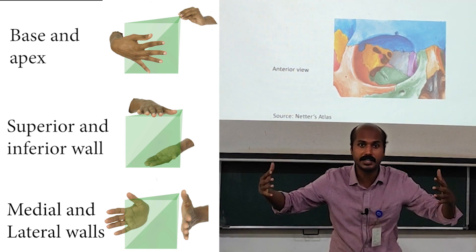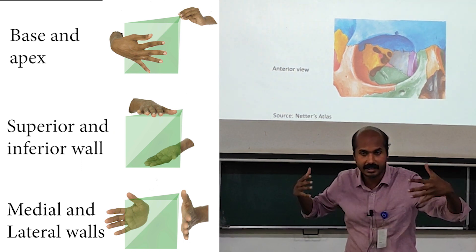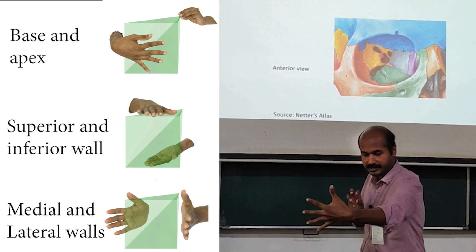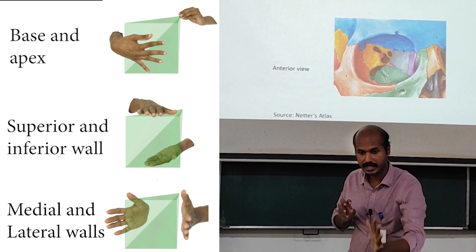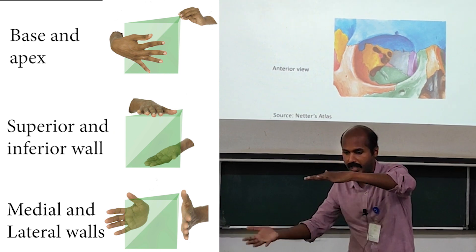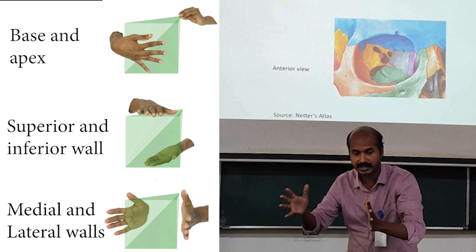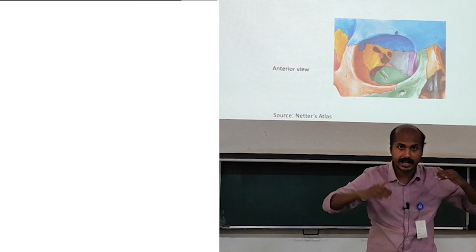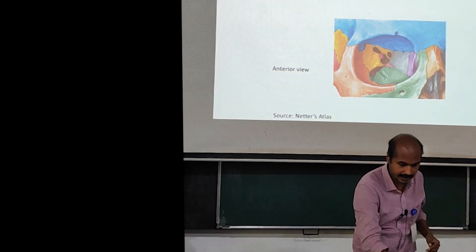So the orbit is pyramidal in shape. The base is the anterior orbital margin and the apex is deep posteriorly. The medial wall, lateral wall, roof, and floor all come together at the apex. This is the deep orbit. If I take an axial section of the skull — an axial section, superior view — you can see the right orbit and the left orbit.